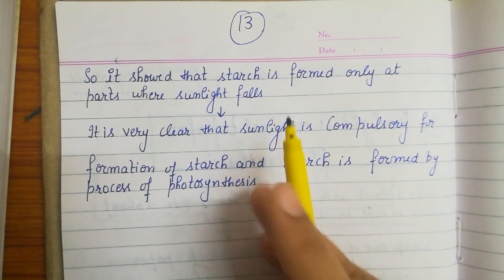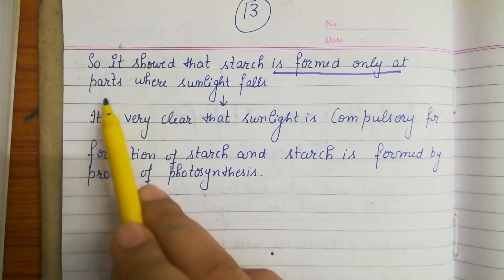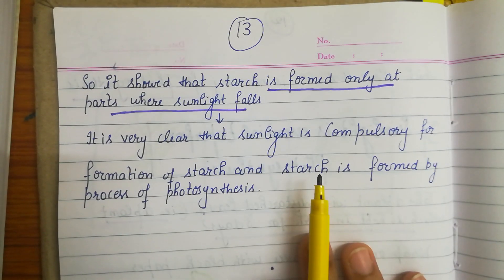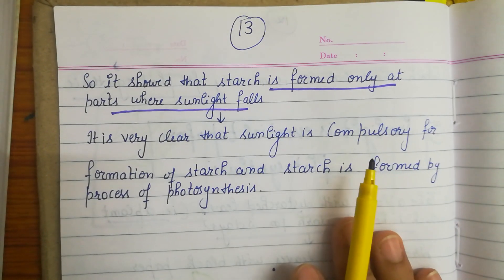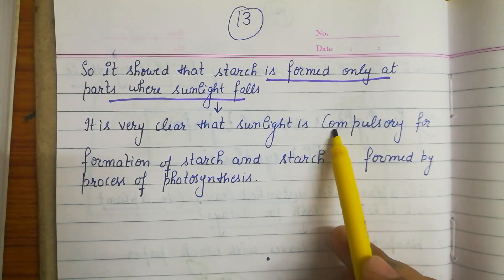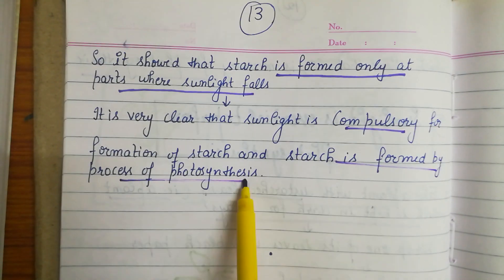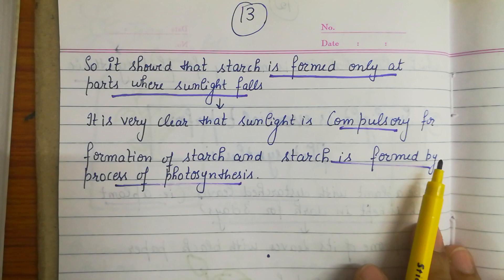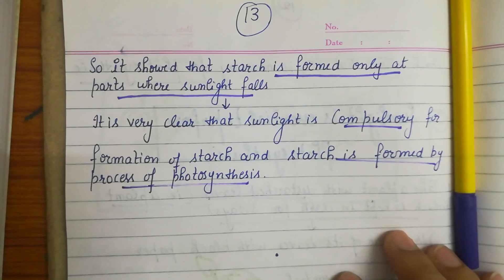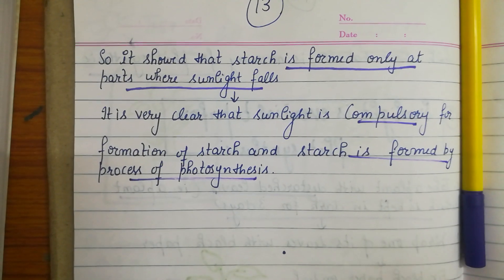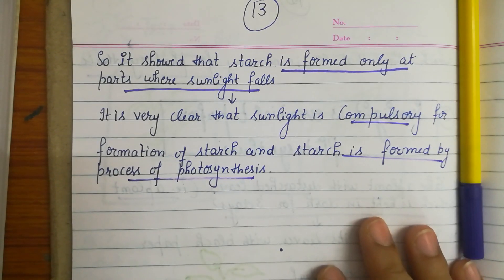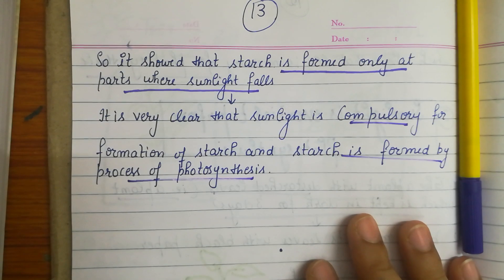So it is confirmed that starch is formed only at the parts where sunlight falls. It is very clear from this experiment that sunlight is compulsory for the formation of starch, and starch is formed by the process of photosynthesis. Here we are finished with the first subtopic of Life Processes, which is autotrophic nutrition.